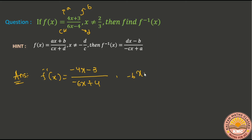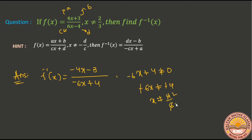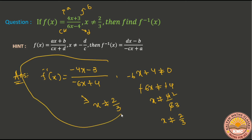The denominator: minus 6x plus 4, not equal to 0. So minus 6x is not equal to minus 4, which gives x not equal to 4 by 6, that is x not equal to 2 by 3.